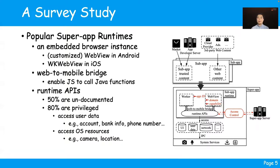To analyze how these popular app-in-app ecosystems perform identity checks, we first need to take a deep look at the super app runtimes. As illustrated in this figure, a super app provides a runtime for sub-apps with three main components. First, the super app needs to provide an embedded browser instance to support the running of sub-app code — it could be WebView in Android or WKWebView in iOS. Second, the super app uses a web-to-mobile bridge to enable the sub-app to call Java functions and return results to the JavaScript environment. The last component is the runtime APIs on the Java side. In our survey study, we find that 80% of these runtime APIs are privileged, which can access lots of user data or OS resources such as account and bank info, or the camera and GPS location. To our surprise, around 50% of the runtime APIs are not documented and should not be exposed to third-party sub-apps.